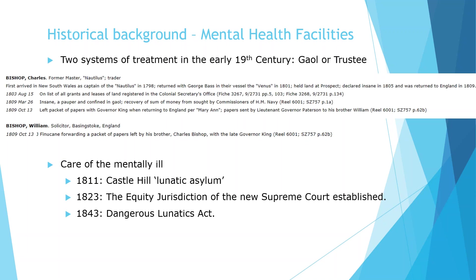The first recorded case was that of Charles Bishop. An entry in our online index to the Colonial Secretary's Papers 1788 to 1825 shows that Charles Bishop was subject to both systems of treatment — he was declared insane, considered a pauper, and confined in jail, then sent back to England in 1809 to the care of his brother William. Assessment of individuals believed to be mentally ill commenced with a building at Castle Hill used as a lunatic asylum, continuing until 1825 when patients were moved to Liverpool Courthouse, which served as an asylum until Tarbon Creek — later known as Gladesville — was built.